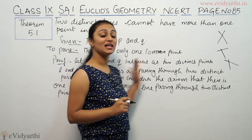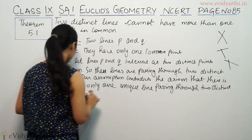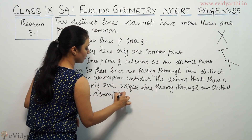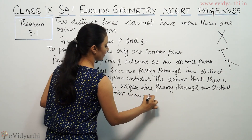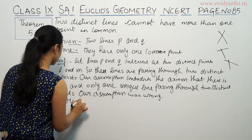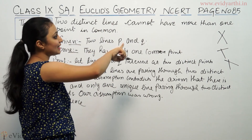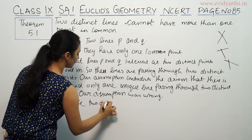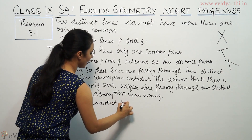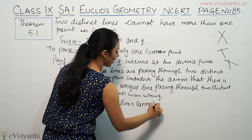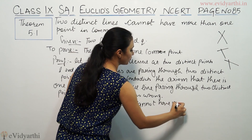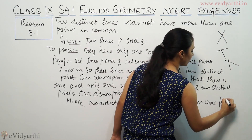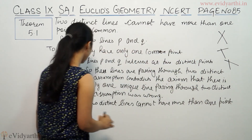So that means our assumption was wrong. Our assumption was wrong. Hence, two distinct lines cannot have more than one point in common.